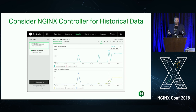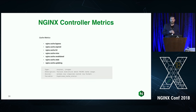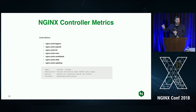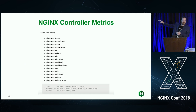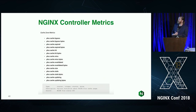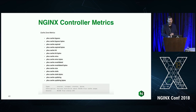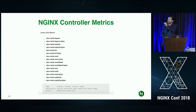There's a bunch of data in Controller. The Controller agent grabs all the cache logs — so if you have those variables in the cache log it grabs them and sends them to Controller. It also grabs all the API data from NGINX Plus: warmth, size, served, bypassed — all that stuff. You can create custom graphs of your CDN or cache environment in Controller, which is really useful for seeing how your CDN is performing.